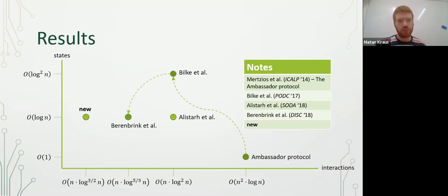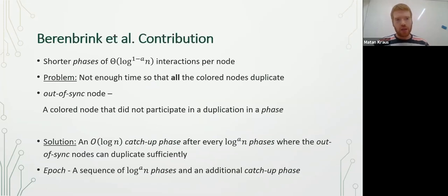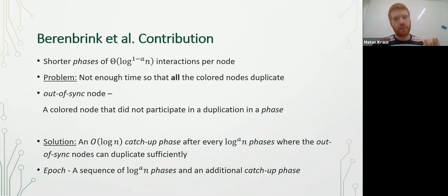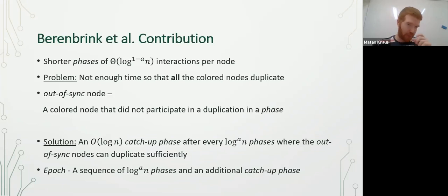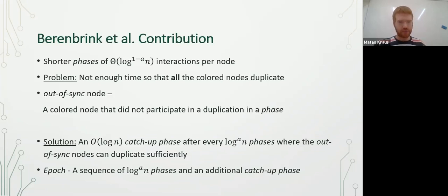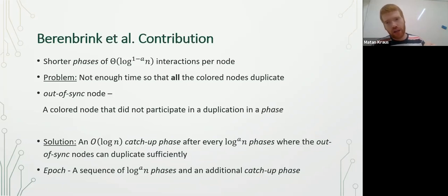Let's proceed to Bernbrink et al.'s contribution. They have shorter phases — each phase has only Θ(log^{1-a} n) interactions. The problem is that now the phases are too short, so we can't guarantee with high probability that all colored nodes duplicate. Therefore, they introduced the out-of-sync node, which is a node that didn't manage to participate in duplication during the duplication stage of a phase. The solution is to add a long catch-up phase after every log^a n phases.